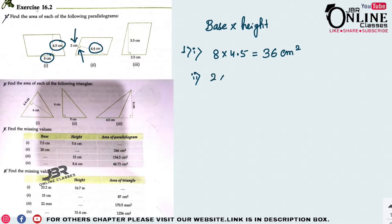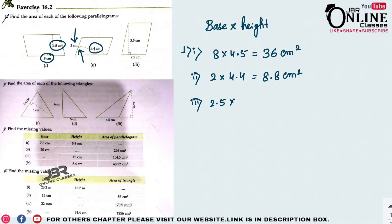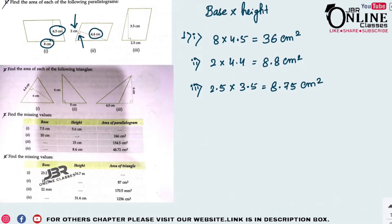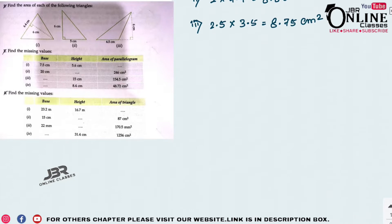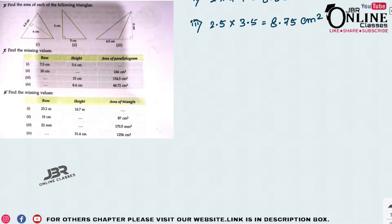So 2 × 4.4 = 8.8 cm² as the area. For the last one, 2.5 is the base and 3.5 is the height, so area = 8.75 cm². Very easy problem. Now move on to the next one.